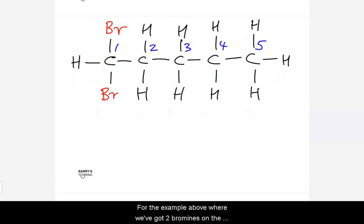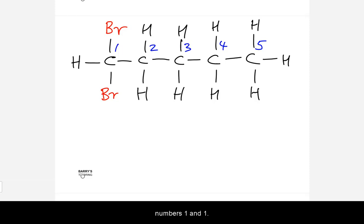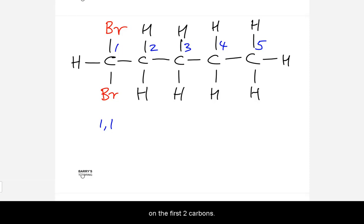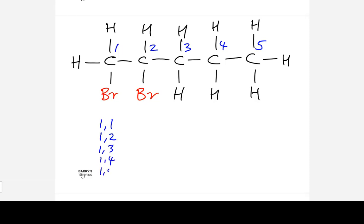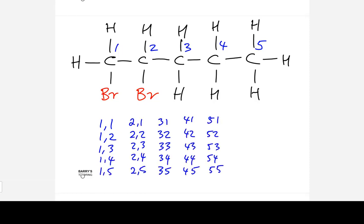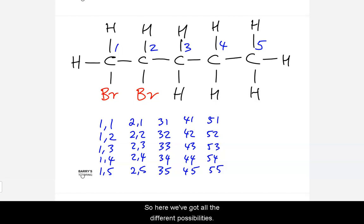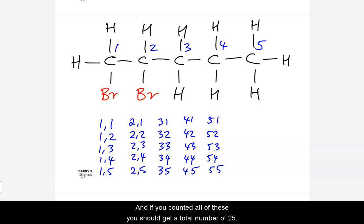For the example where we have two bromines on the same carbon — carbon one — we represent this as 1,1. For our original scenario where the bromines are on the first two carbons, we represent this as 1,2. All the different combinations can therefore be filled in systematically. Going through all possibilities from 1,1 to 5,5, if you count all of these you should get a total of 25.